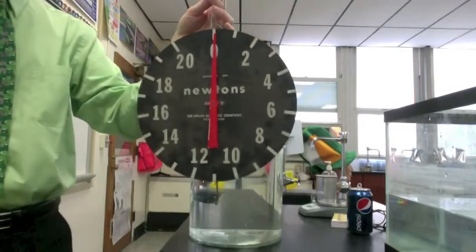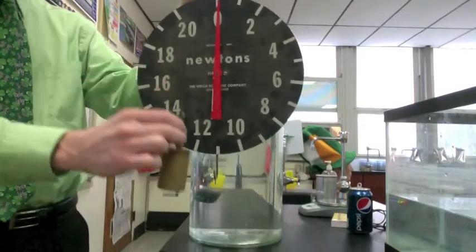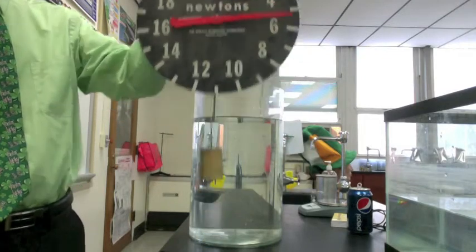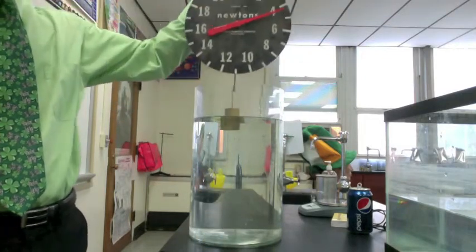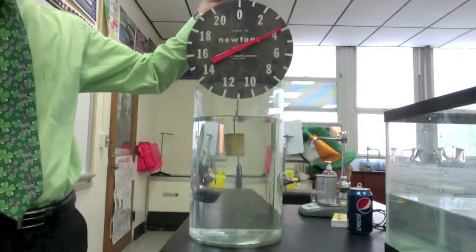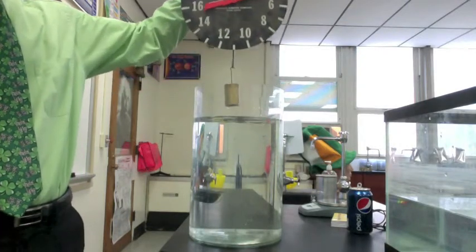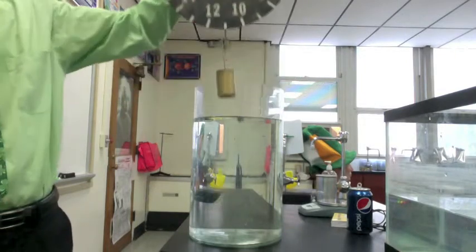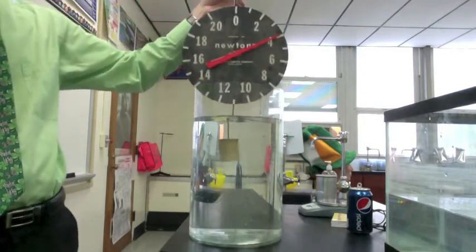Here we can compare the weight of an object in air to the weight of an object in water. In air, this object weighs 4.5 newtons, but in water, it only weighs 4 newtons. That means the buoyant force must be pushing up on the object with a force of 0.5 newtons. This force is not enough to balance out the object, so it will sink.